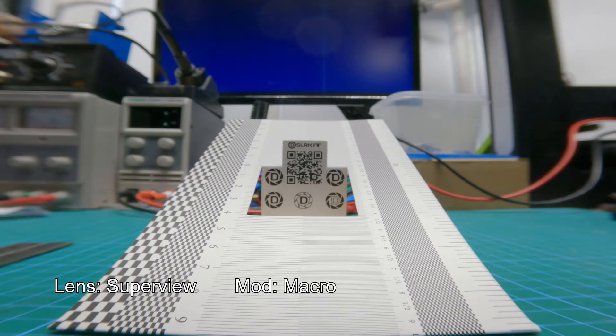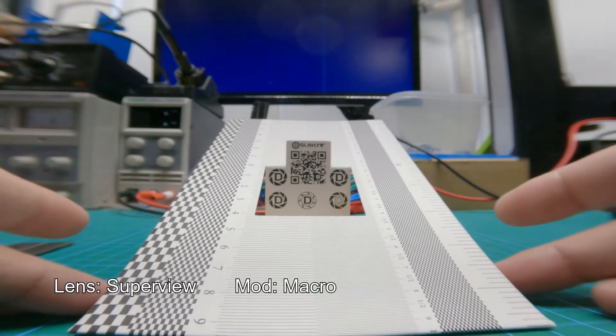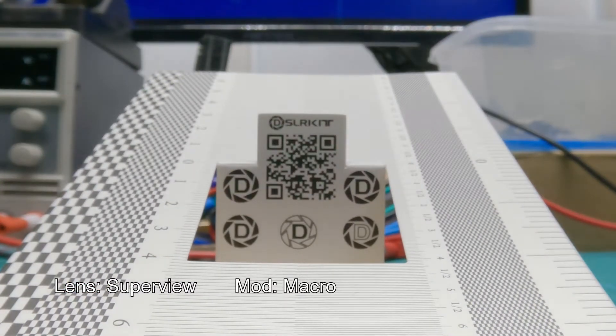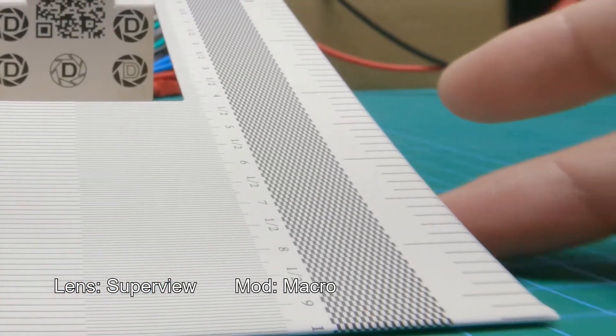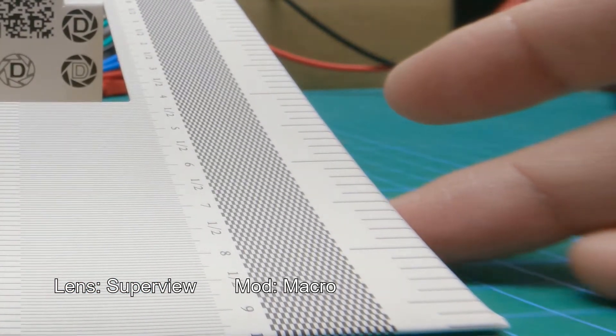With SuperView at 4K, you see haze throughout the picture. And if you punch into a 1080 crop and start to look at the edges of the picture, you can see a haze, but it's still quite usable.